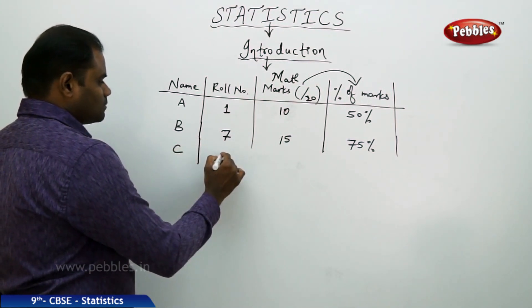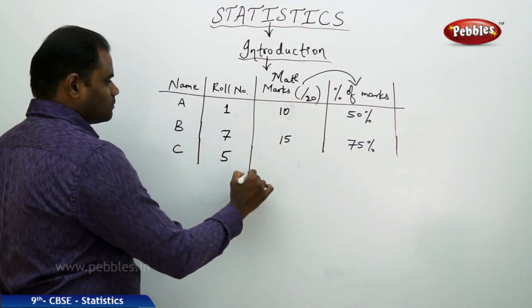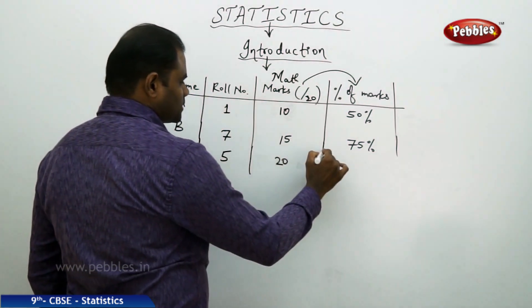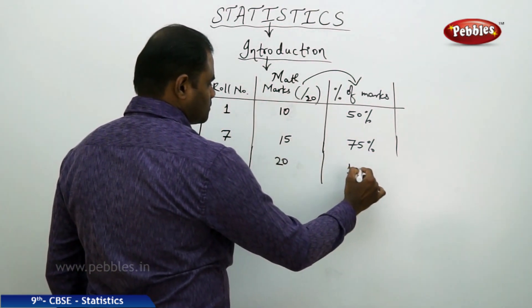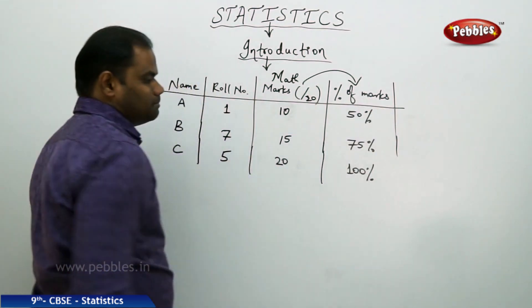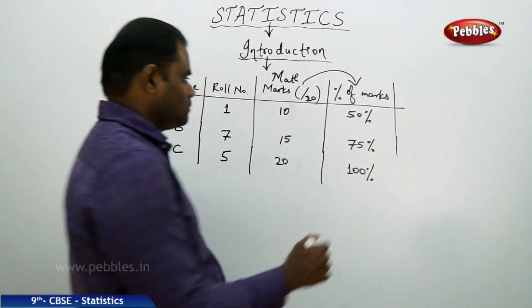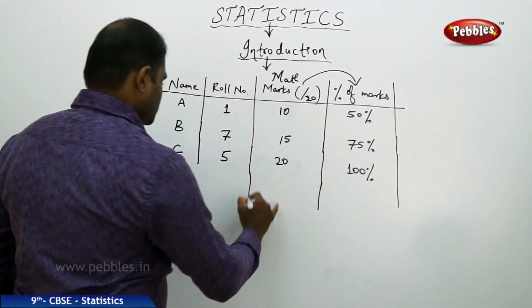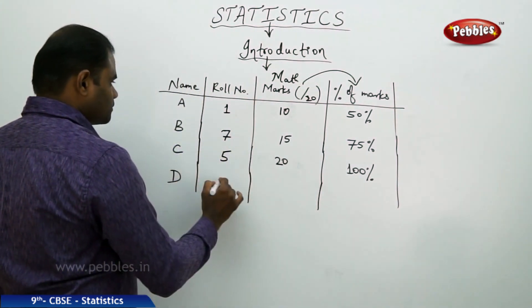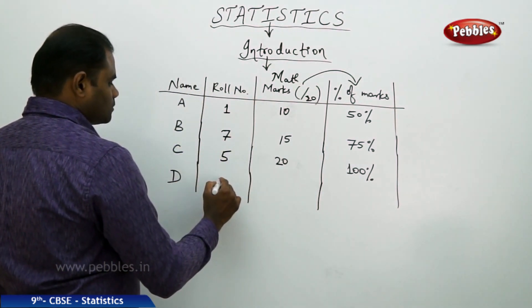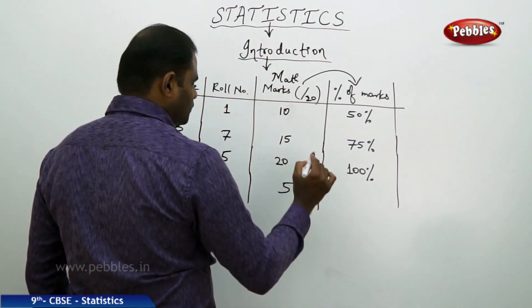Say I take student C with roll number 5 who got 20 marks out of 20, which is 100%. And finally, student D with roll number 3 with 5 marks out of 20, which is 25%.